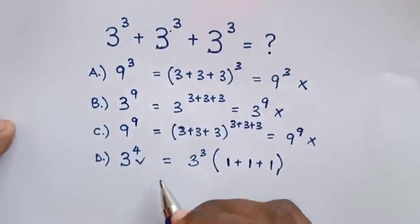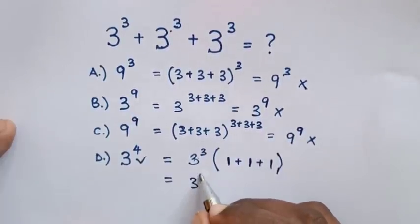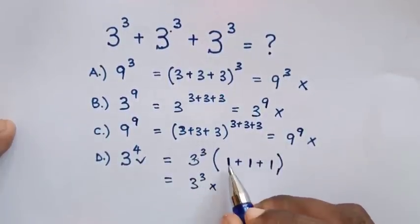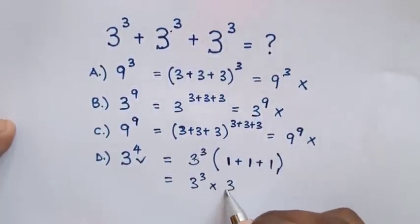This equals 3³ times 3, which is the same as 3³ times 3¹.